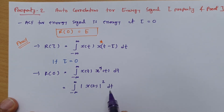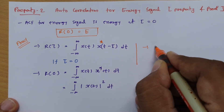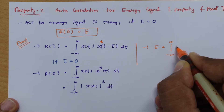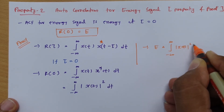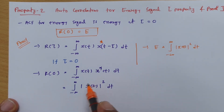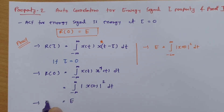This is the integration of the modulus of x(t) whole squared dt, and this is exactly the definition of energy. The energy of a signal is calculated as the integral from minus infinite to infinite of the modulus of x(t) whole squared dt. So we can say this equals energy E, and therefore r(0) is equals to the energy of the signal.